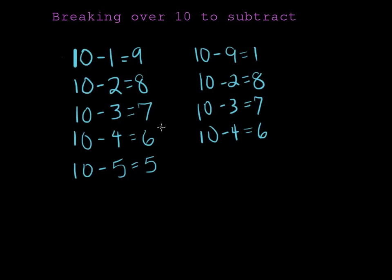10 minus 2 is 8, 10 minus 3 is 7, 10 minus 4 is 6, and 10 minus 5 is 5. We could also flip some of these problems around and say,